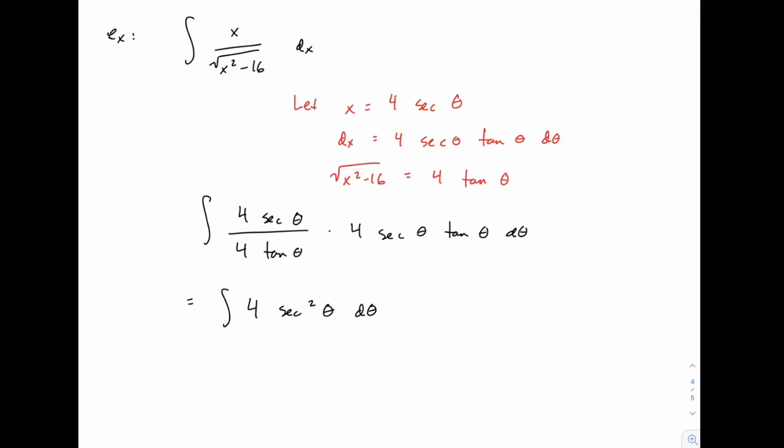Now thankfully this one is a really easy integral to work out. There's no need to do a u substitution or any other type of integration. It's just directly one that we know that the integral of secant squared is the tangent of theta. That's one that we memorized very early on. So the answer is 4 tangent theta.